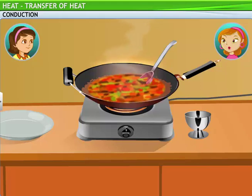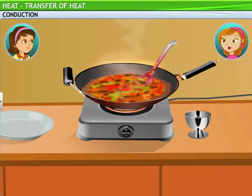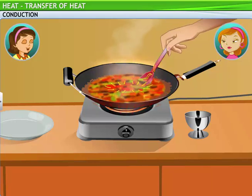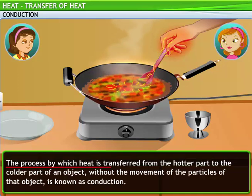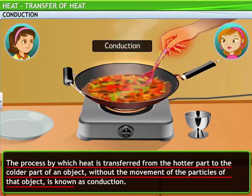Remember how the wok gets heated when placed in contact with the flame? The heating of the wok and the spoon placed in it are results of conduction of heat. Heat from the flame gets transferred to the wok, and when you touch the spoon, the heat from the spoon gets transferred or conducted to your hand. The process by which heat is transferred from the hotter part to the colder part of an object without the movement of the particles of that object is known as conduction.